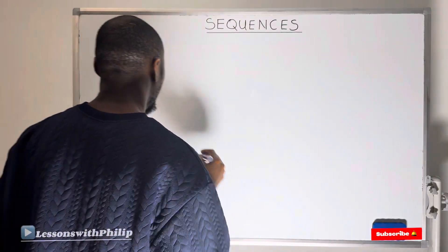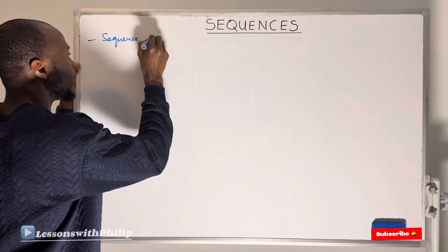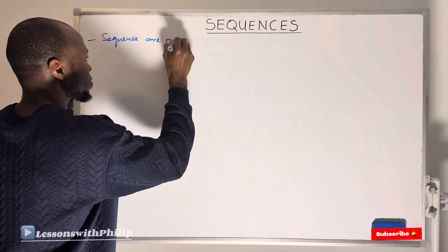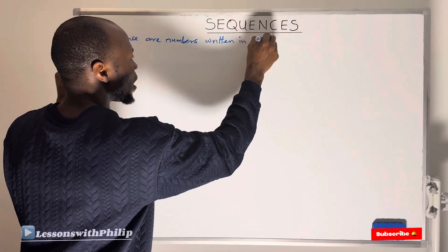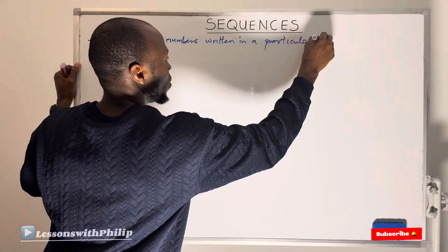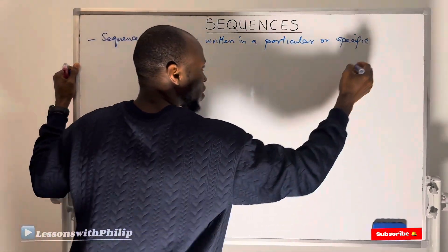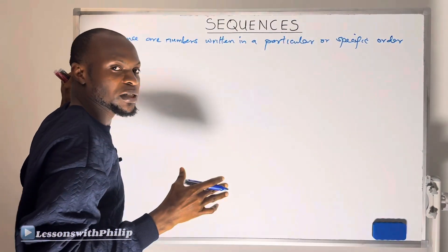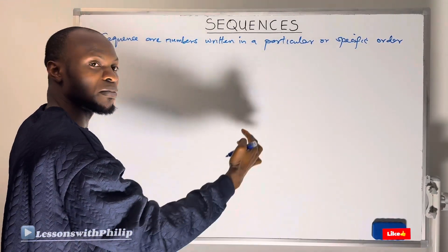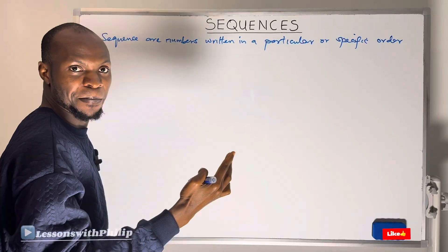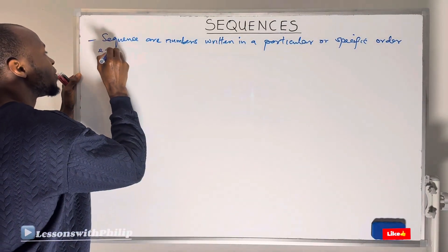What is a sequence? A sequence is when numbers are written in a particular or specific order. Such arrangements are known as a sequence — when you have an arrangement of numbers in a particular order, that arrangement is known as a sequence.